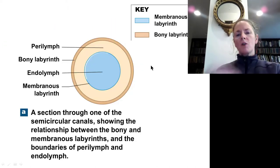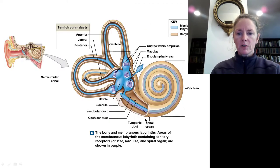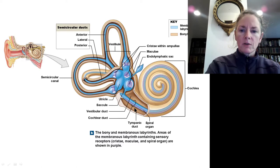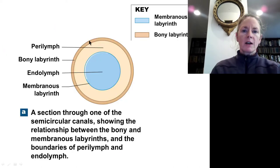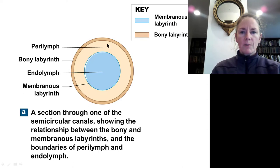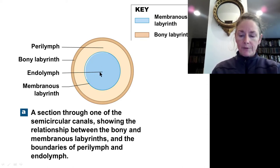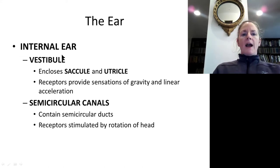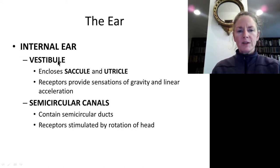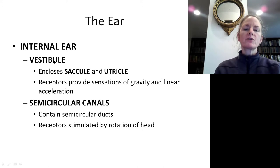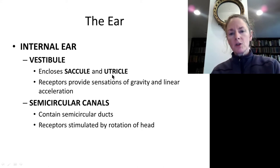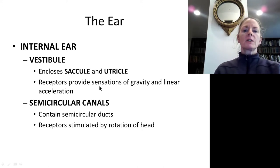If we take a cross-section of the cochlea, we can see the bony labyrinth with perilymph surrounding the membranous labyrinth with endolymph. The vestibule is further subdivided into the saccule and the utricle, both of which give us sensations of gravity and linear acceleration.